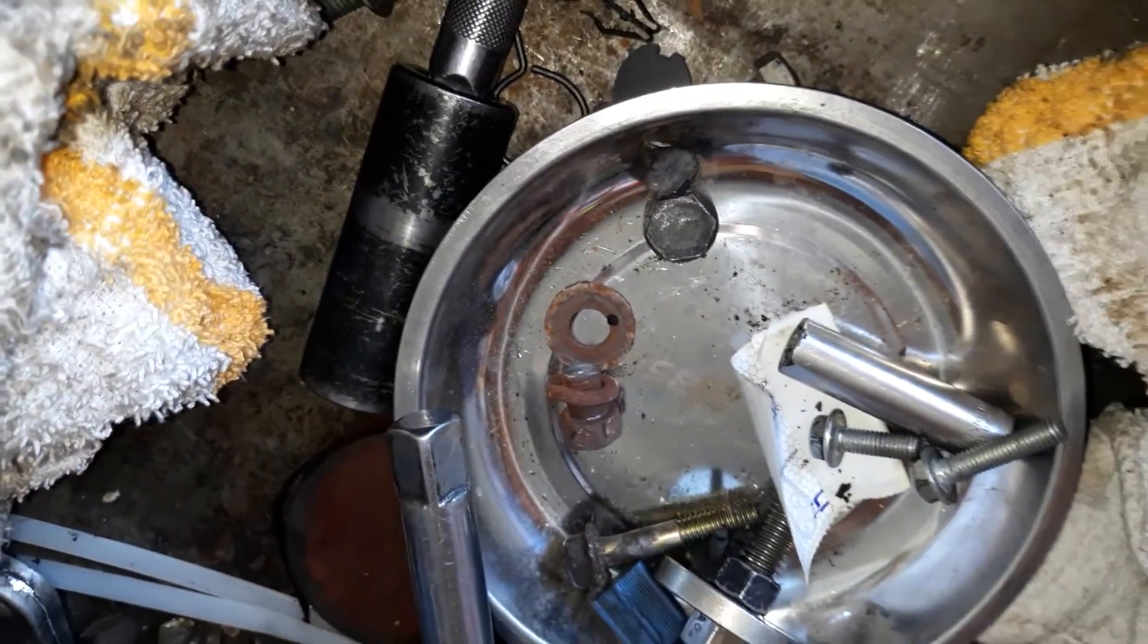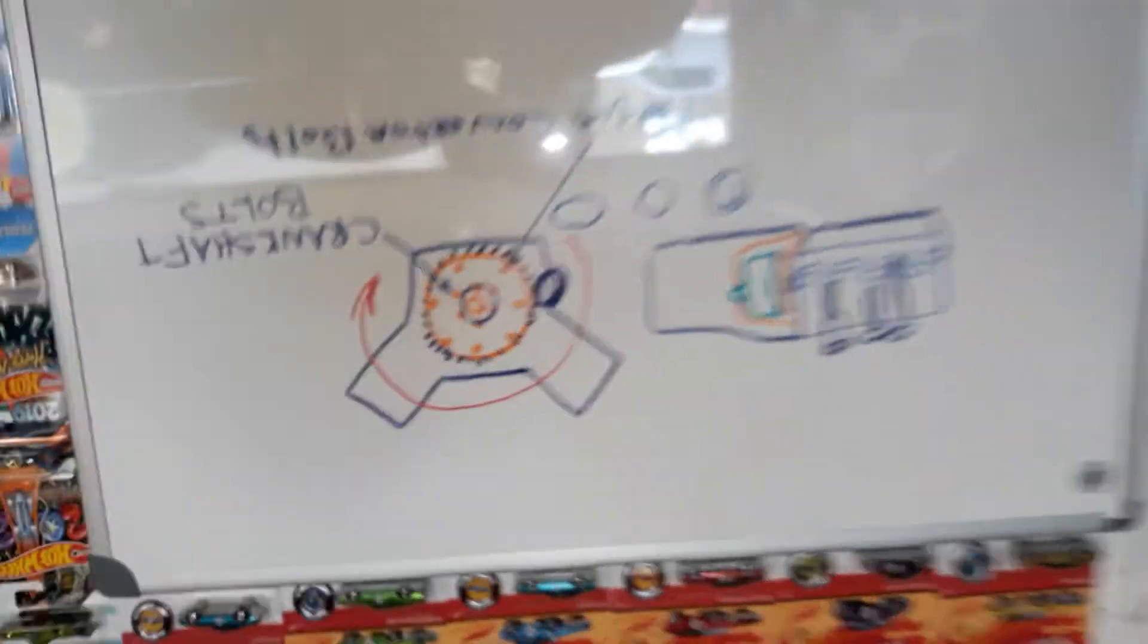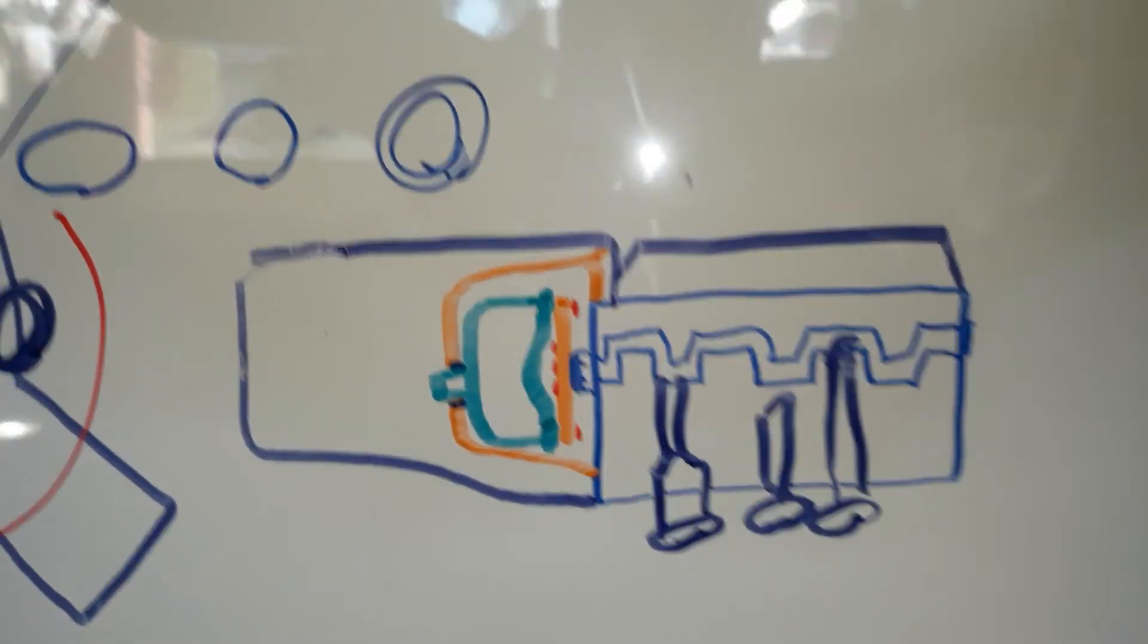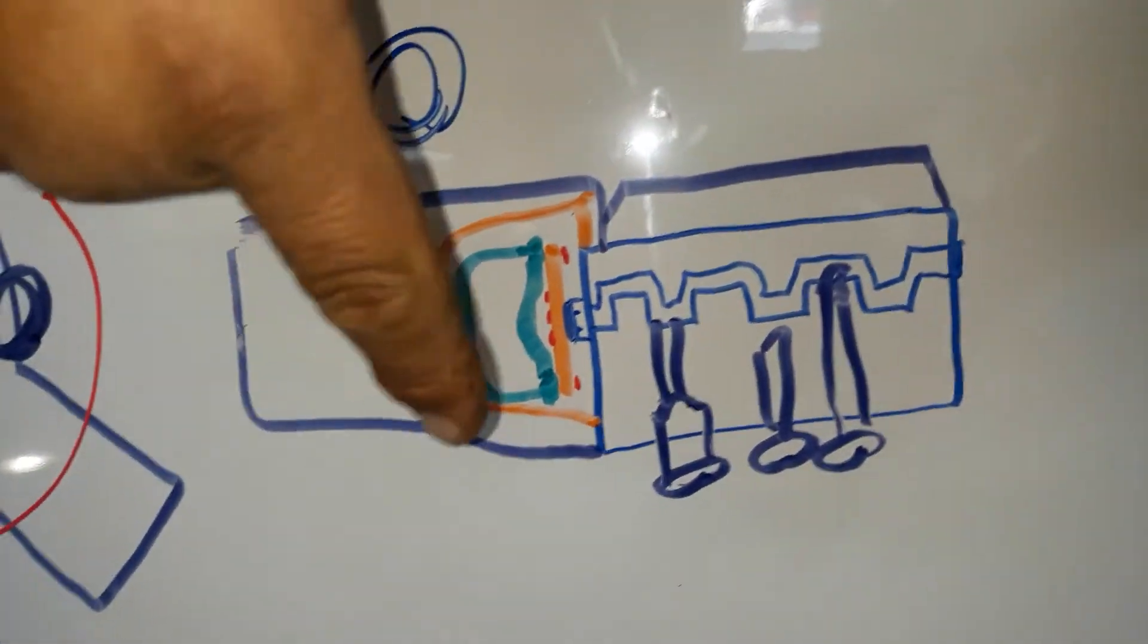I got a side view and a front view of the engine, tranny, and flywheel flex plate. From the side, this is your engine, this is the transmission, that's your torque converter. See those little red lines? One here, one up there.